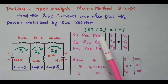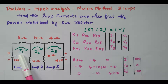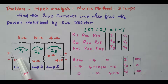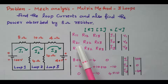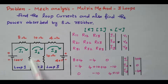What is R13? The resistance available between the first loop and the third loop — there is no connection, because the second loop lies in between. There is no common element available between the first and third loops, so R13 = 0. R21 is similar to R12 — second loop and first loop share the 4-ohm resistor, so R21 = −4.